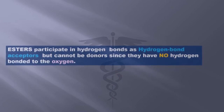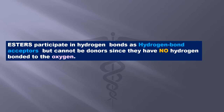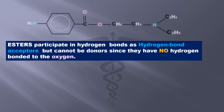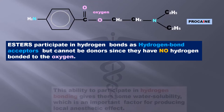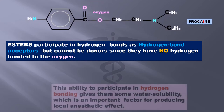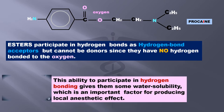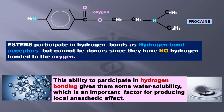Esters participate in hydrogen bonds as hydrogen bond acceptors but cannot be donors since they have no hydrogen bonded to the oxygen. This ability to participate in hydrogen bonding gives them some water solubility, which is an important factor for producing local anesthetic effect.